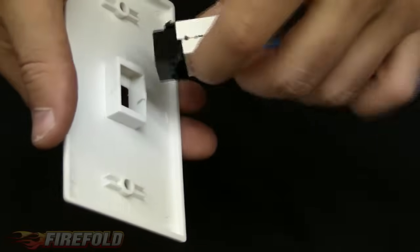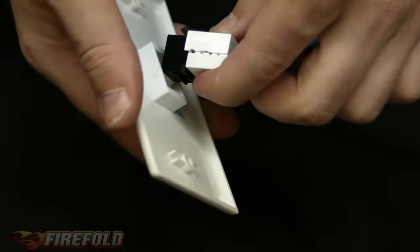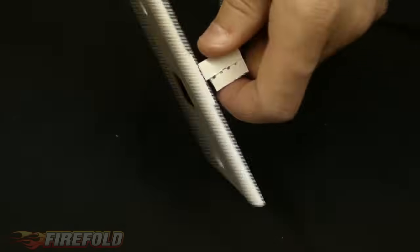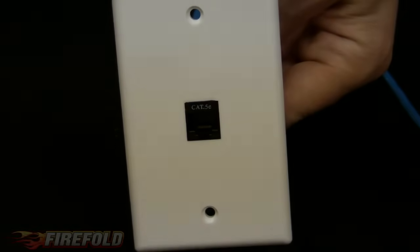Now you're going to take the Keystone Jack. You're going to put the bottom part, the nub, in first. And you're going to just clip it into place, like so. You've got your completed Cat5 Keystone Jack.